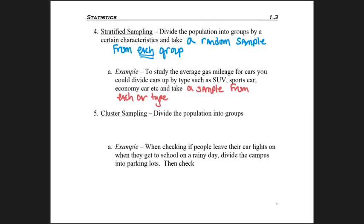What this does is you've got randomness within your sample, but you also know that you didn't accidentally randomly get all economy cars that probably get good gas mileage. You've got a good sampling of cars. Now, that requires you to divide up the cars and find all the types.